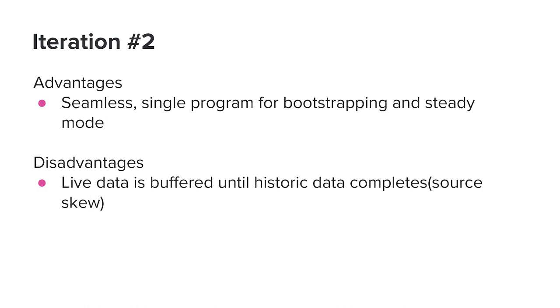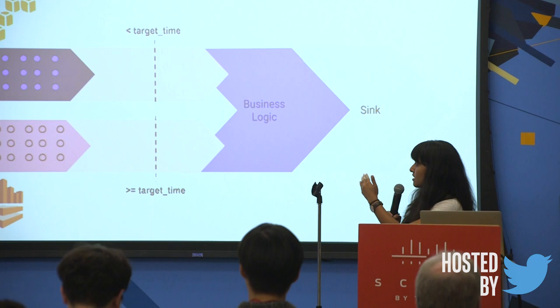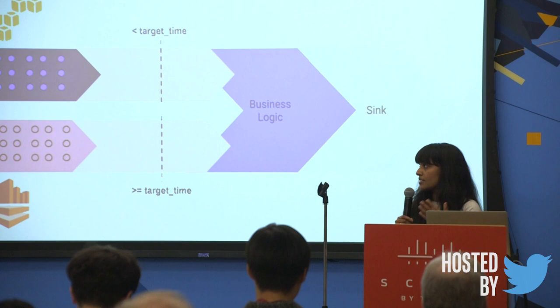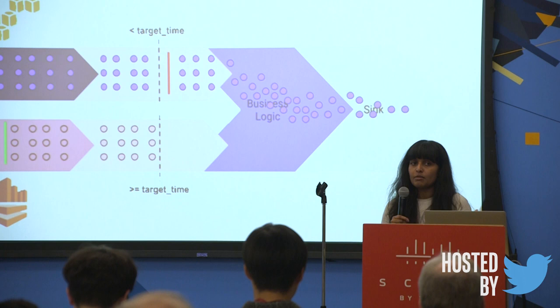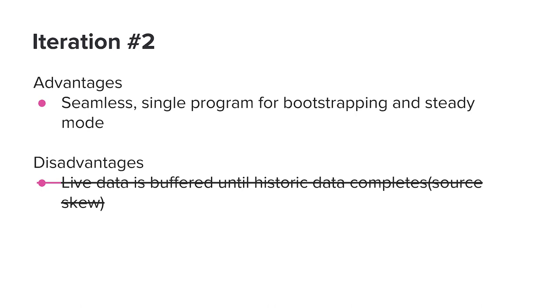However, a disadvantage is that since we are unioning data from both sources, the live events coming through Kinesis are not being used until all the historic data has been processed, and this data is being buffered. In the case of programs with large windows, this was causing performance degradation. This is a common problem in any scenario where there's a source queue skew, and we started thinking about this and came up with a solution.